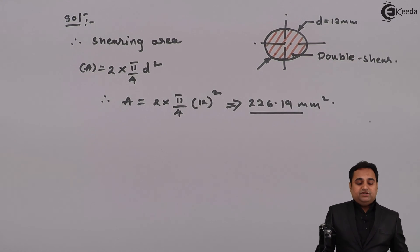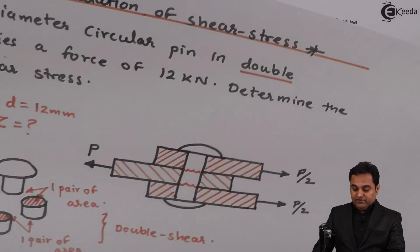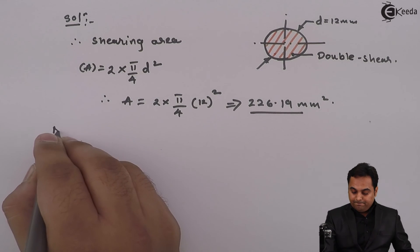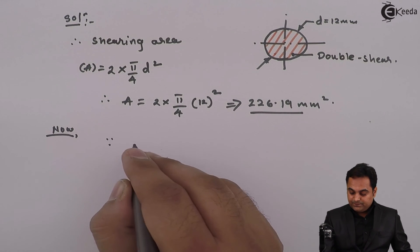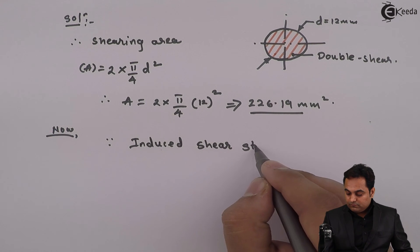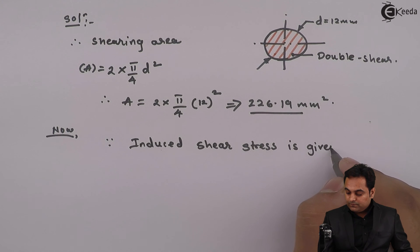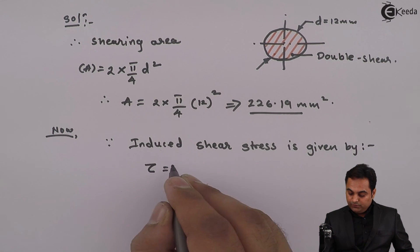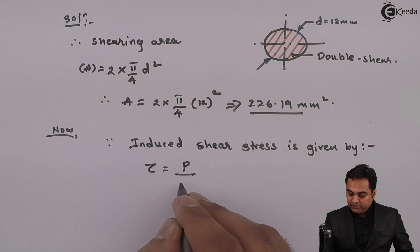Now after getting this shearing area, we have to go for the calculation of induced shear stress tau. Since induced shear stress is given by tau equals force upon area.